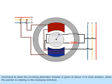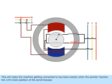Command to close the incoming alternator breaker is given at about 11 o'clock position when the pointer is rotating in the anticlockwise direction. This will make the machine getting connected to bus bars exactly when the pointer reaches the 12 o'clock position of the synchroscope.